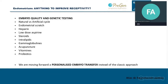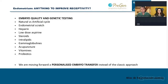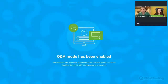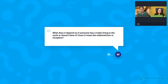Thank you all for your attention and I will be very happy to answer your questions or concerns about this subject. Thank you so much Dr. Francisco for bringing all those details and explaining how it works. Now it is your favorite part — you can type all of your questions in the chat. There is a first question ready: what does it depend on if someone has a triple lining in the cycle or doesn't have it, and does it mean the endometrium is receptive?